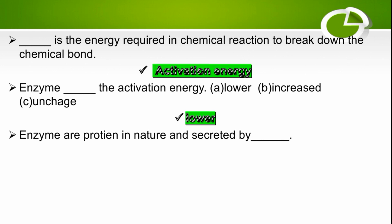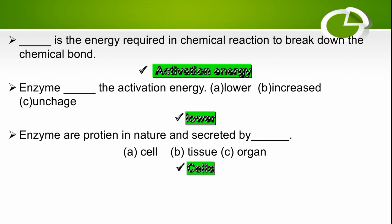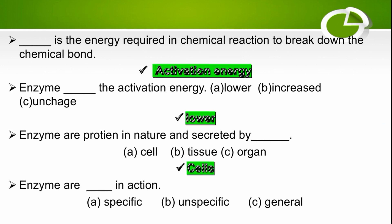Enzymes are protein in nature and are secreted by cells — the right option is cell. Enzymes are specific in nature; one enzyme is specific to one reaction, so the right option is specific.